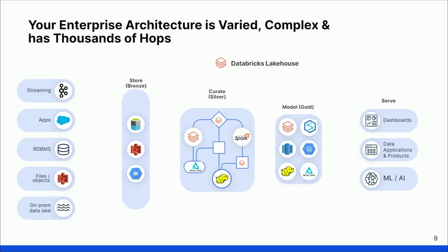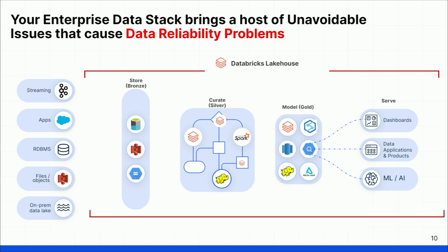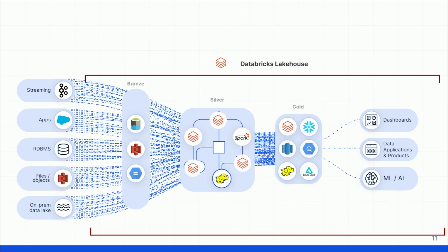Your modern enterprise may look something like this: start at source, we have bronze, silver, gold — curation and serving to data consumers. In a Lakehouse architecture there's a whole host of problems: did the jobs run? Is my data drifting? Percent of non-nulls is increasing — that's an issue. Schemas are drifting, which can break pipelines. Did my data arrive on time? Is my Databricks cluster under-provisioned if we have 10x the data tomorrow?